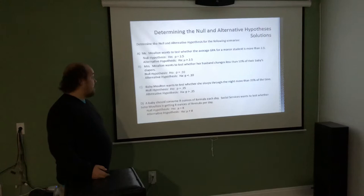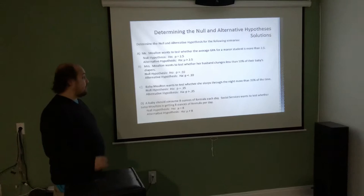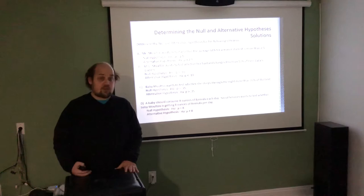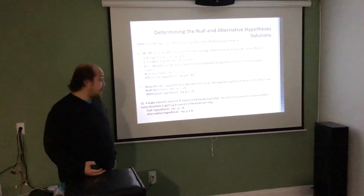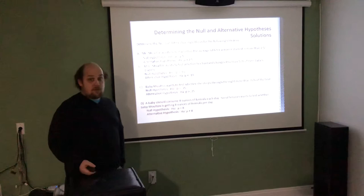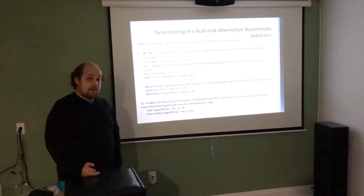Here are all four written out: (A) H₀: μ = 2.5, HA: μ > 2.5; (B) H₀: p = 0.10, HA: p < 0.10; (C) H₀: p = 0.35, HA: p > 0.35; (D) H₀: μ = 8, HA: μ ≠ 8. You need to know H₀ and HA written properly with colons, the correct population parameter (p or μ), and the proper signs — always equal to for the null, and less than, greater than, or not equal to for the alternative.